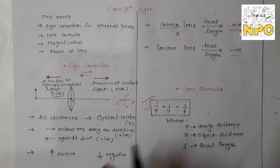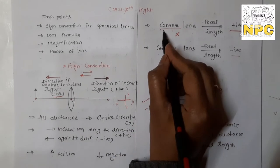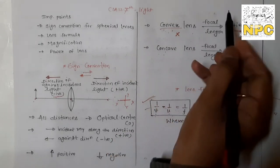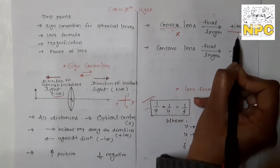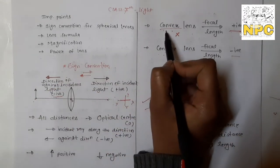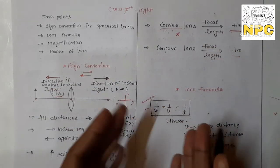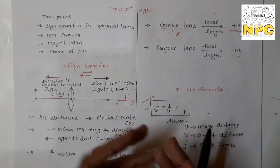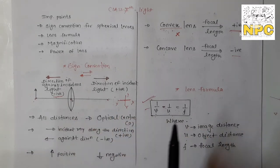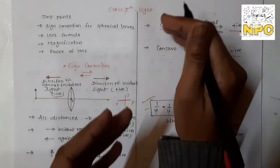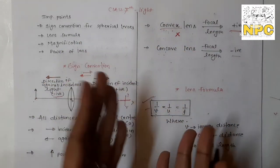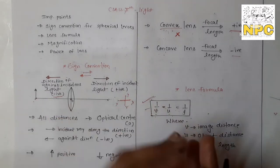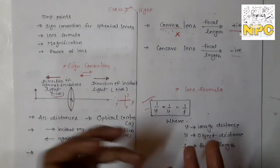There is one different point here. For convex lens and concave lens, the focal length is different. For convex lens, the focal length is taken as positive, and for concave lens it is negative. A simple trick to remember: in 'convex', the letter X at the end — if you slightly close it, it becomes a plus sign. So for convex lens, focal length is positive, and for concave lens it is negative.